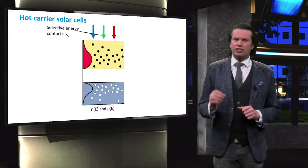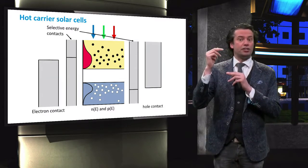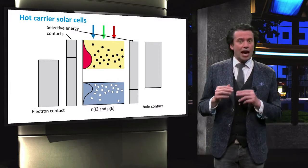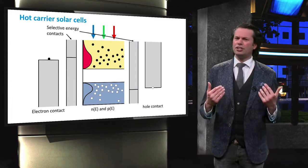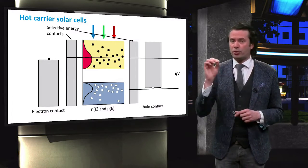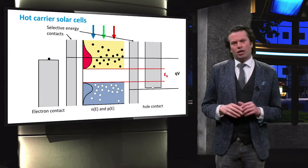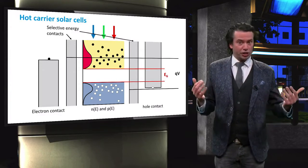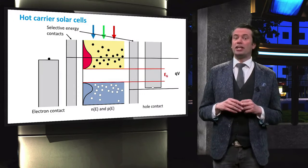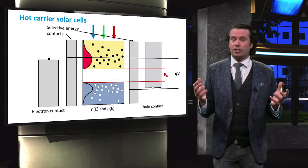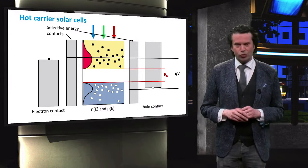Hot carrier solar cells require selective contacts, which only collect electrons above a particular energy level in the conduction band and holes below a certain energy level in the valence band. As such, a larger energy can be utilized per excited charge carrier, as indicated by the Q times V. The average energy of the collected charge carriers would therefore exceed the band gap energy. At the moment, the main challenge is to increase the lifetime of the hot charge carriers, such that they have the time to move from the absorber material to the selective contacts.